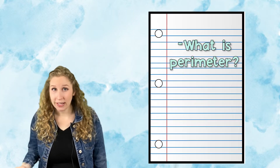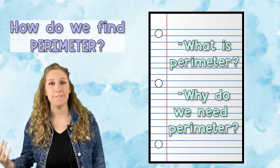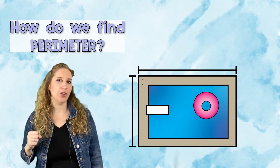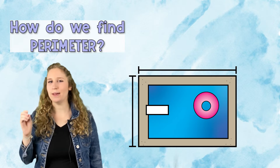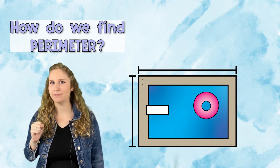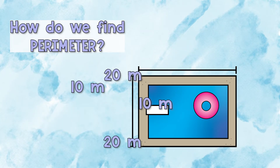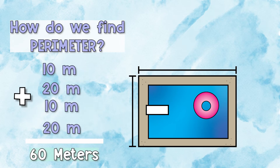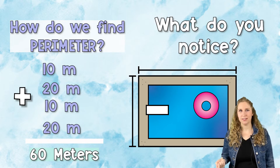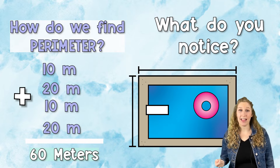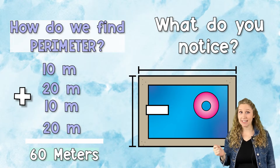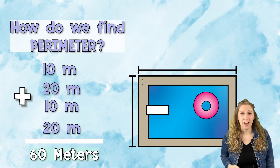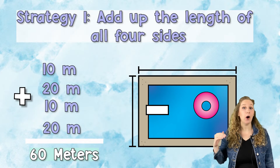So now we know what perimeter is and why we need it — how do we find it? I'm going to show you how we find perimeter; I want you to see what I'm doing. What do you notice? That's right — I'm actually adding all four sides of this rectangle. So one way you can find perimeter is by adding up all four sides.